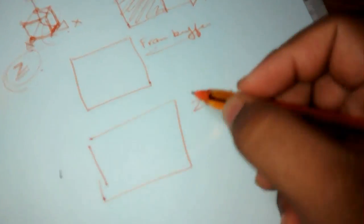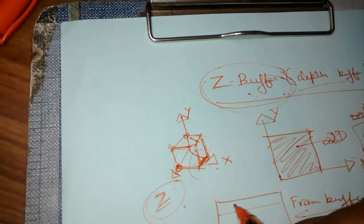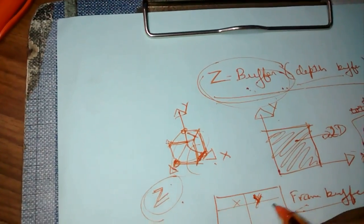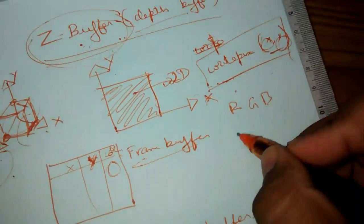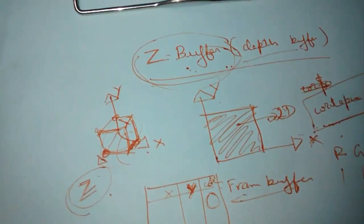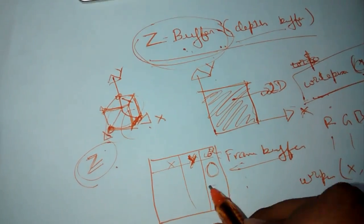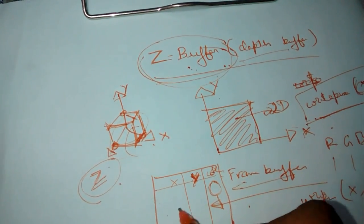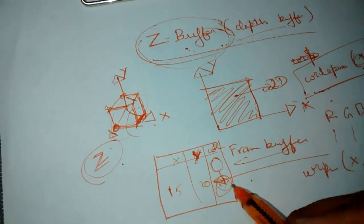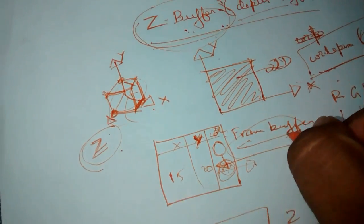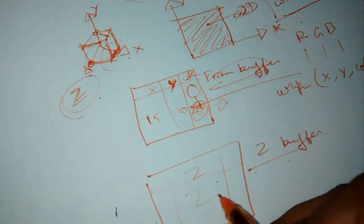We have a frame buffer and a Z buffer. In the Z buffer system, the frame buffer is used to store the X and Y values as well as the color, which will normally be indicated as zero because it's RGB — Red, Green, and Blue. We write it as write pixel of X, Y, color in the frame buffer. It can be something like X axis 15, 20, on 0, or anything within the limits. Everything is stored in the frame buffer except the Z value, so we use the Z buffer to store only the Z values.